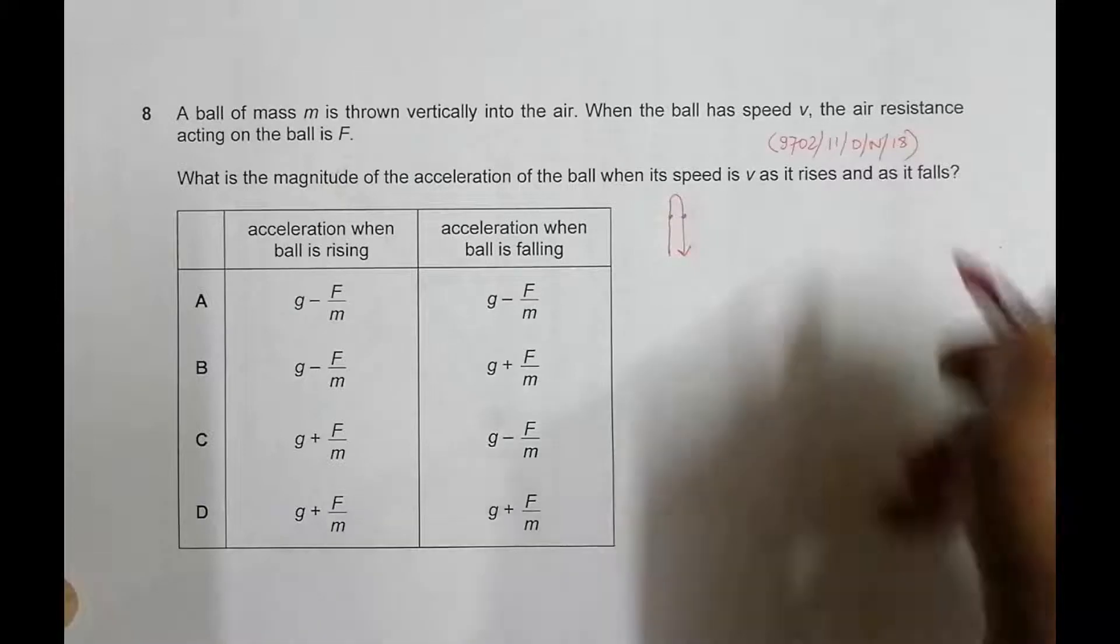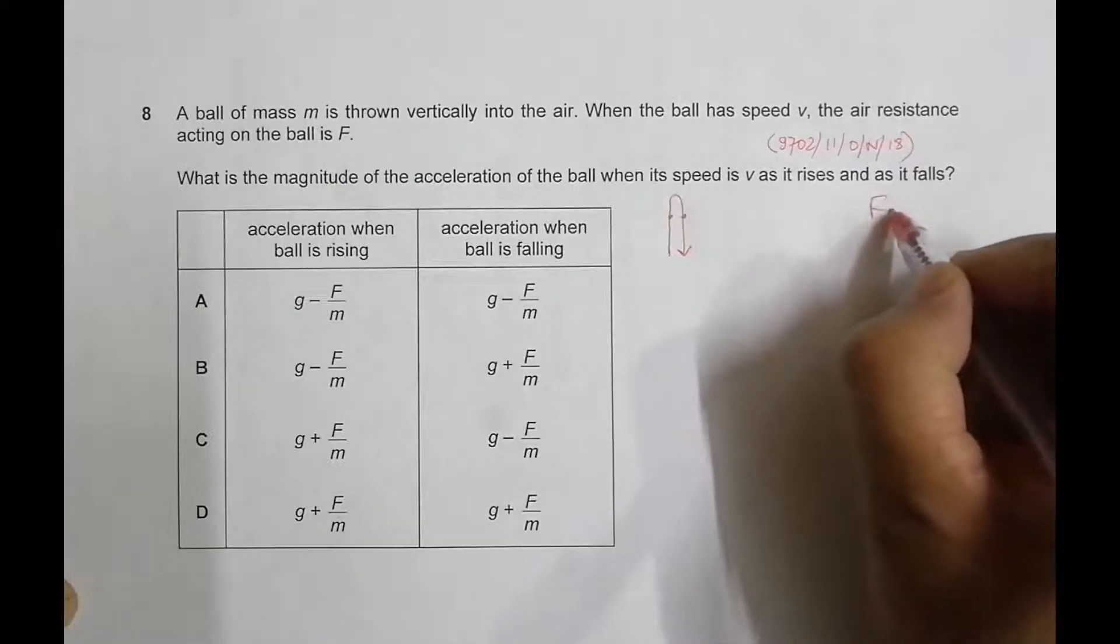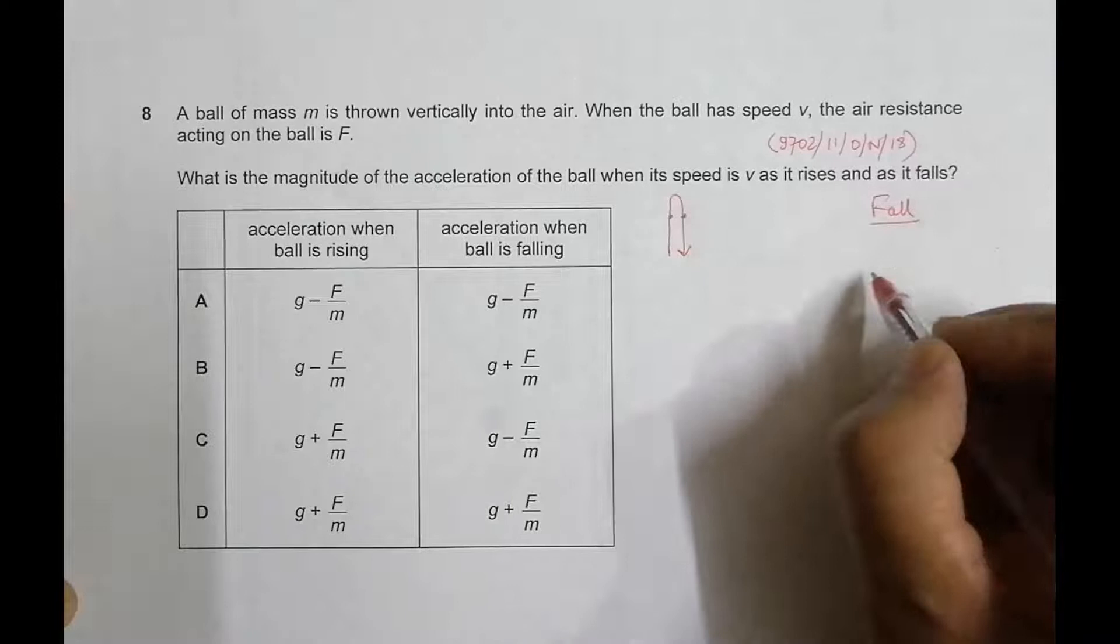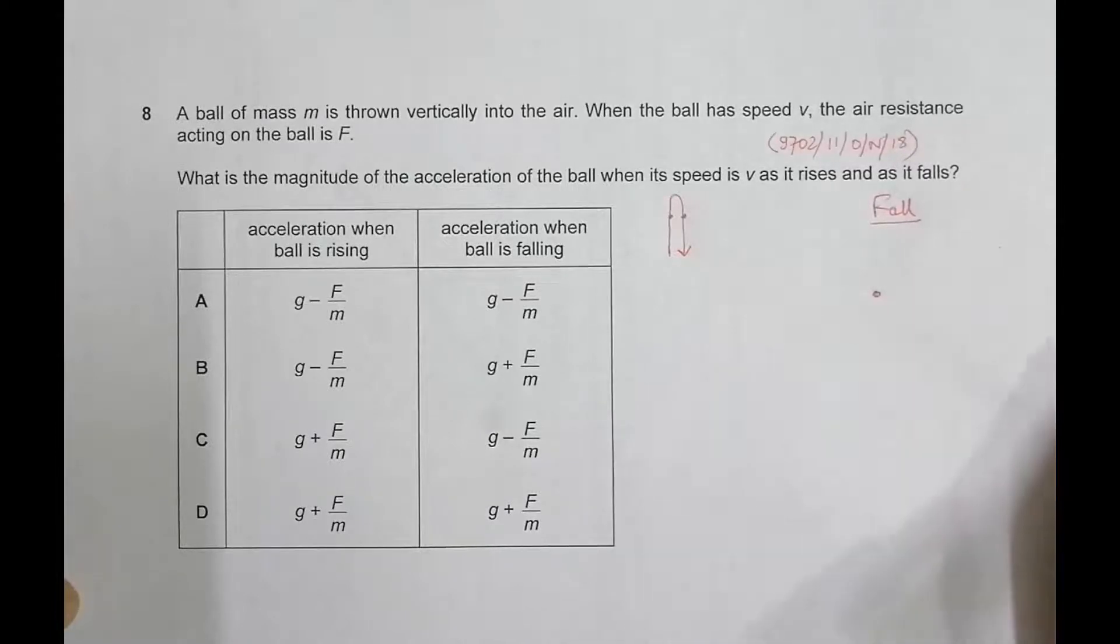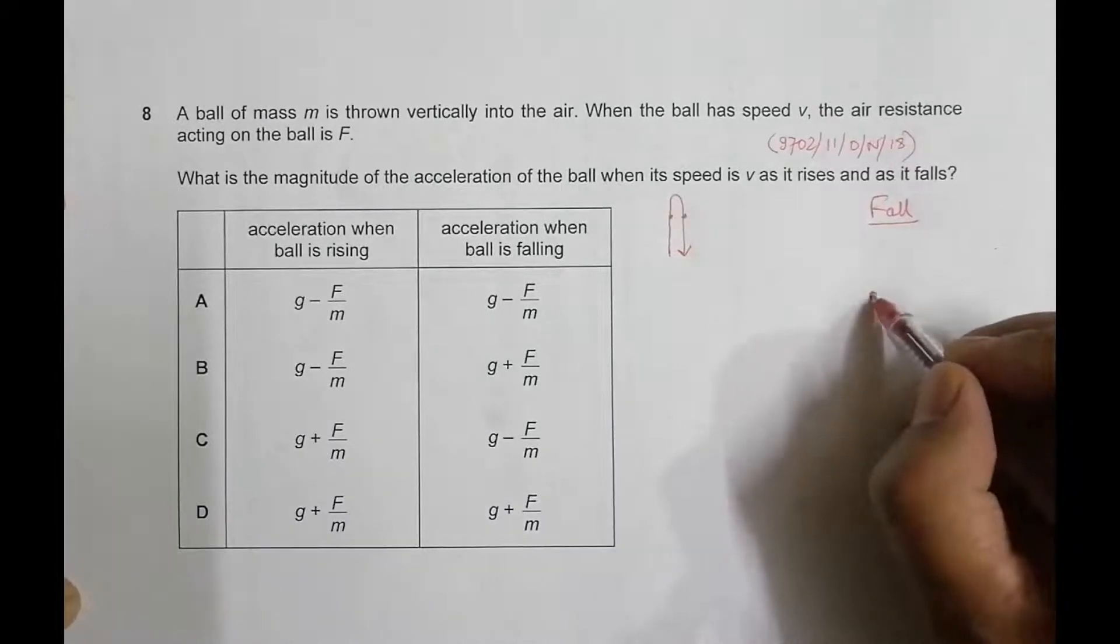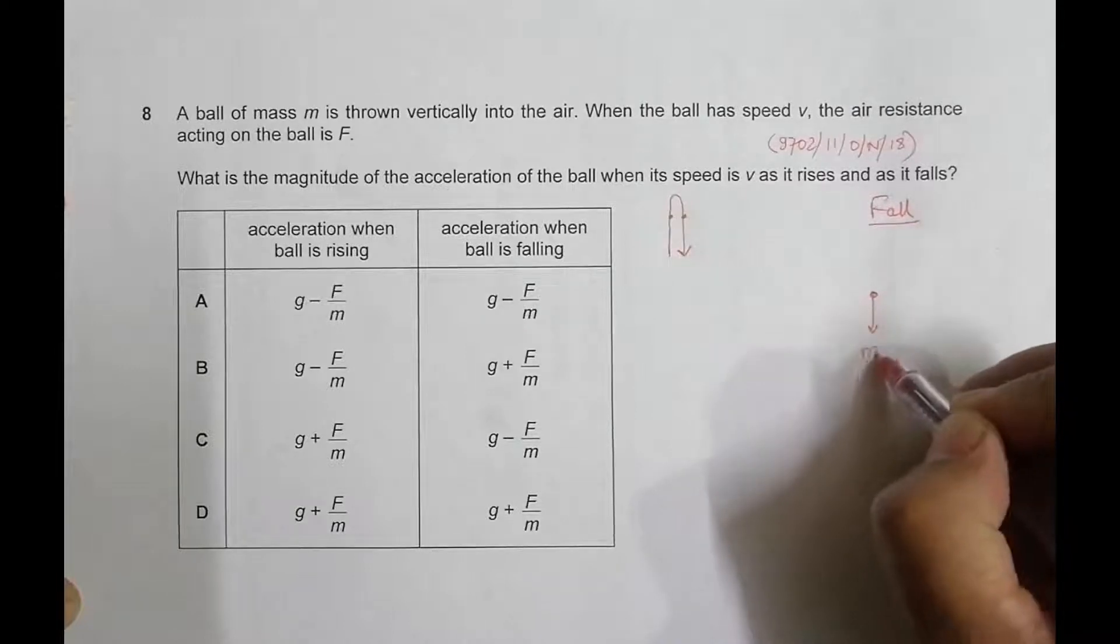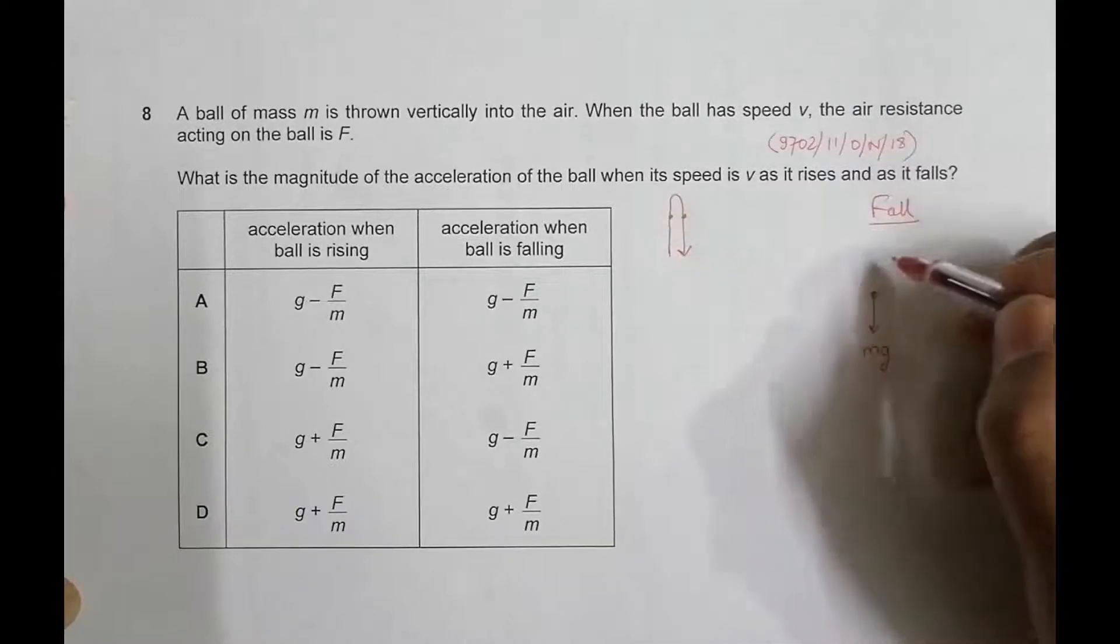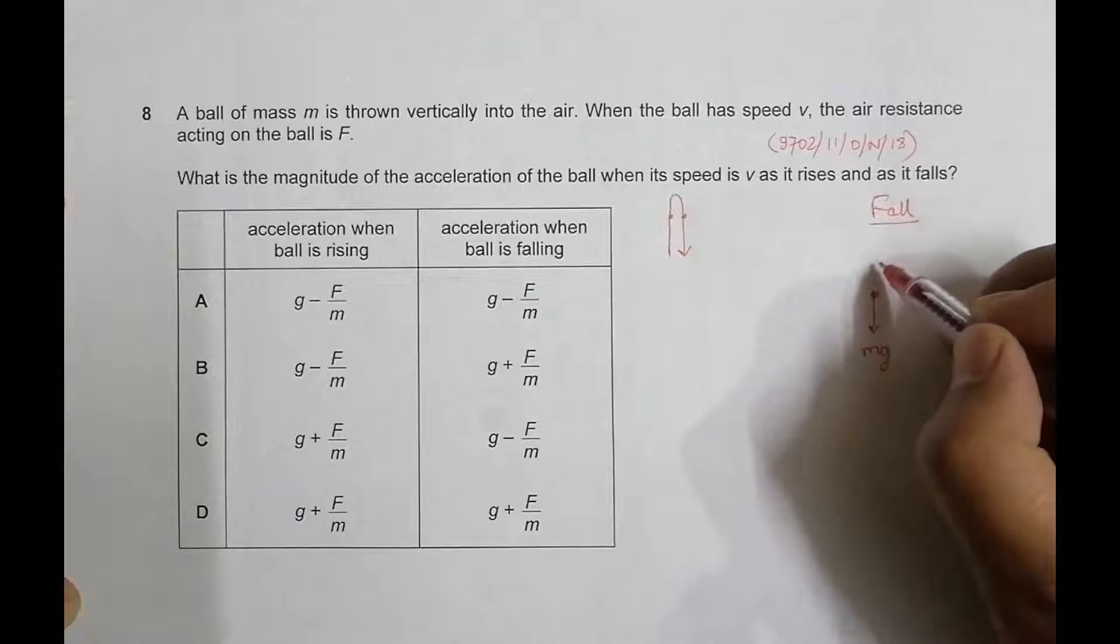First let's do the easy one. So let's say during its fall, when it is falling the body is under the action of two forces. One of the force is the force of gravity which is Mg and since it is coming downward, the opposing force will be like this. So this will be force F.